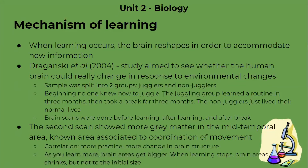Neuroplasticity could also be linked as a mechanism of learning. When learning occurs, the brain reshapes in order to accommodate new information. A study related to this would be Draganski et al., 2004. This study's aim was to see whether the human brain could really change in response to environmental changes.